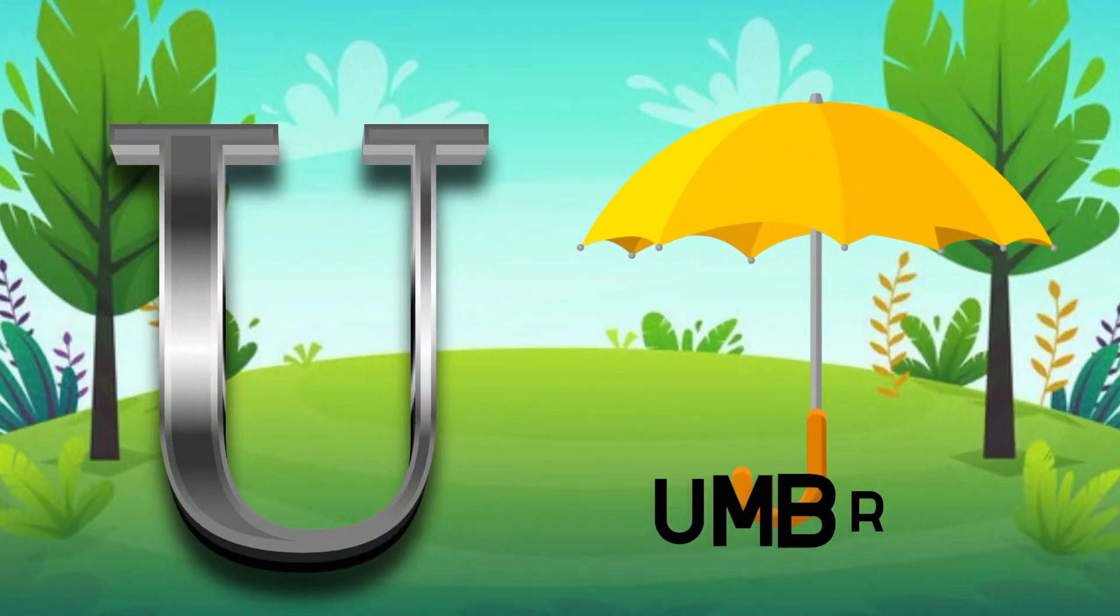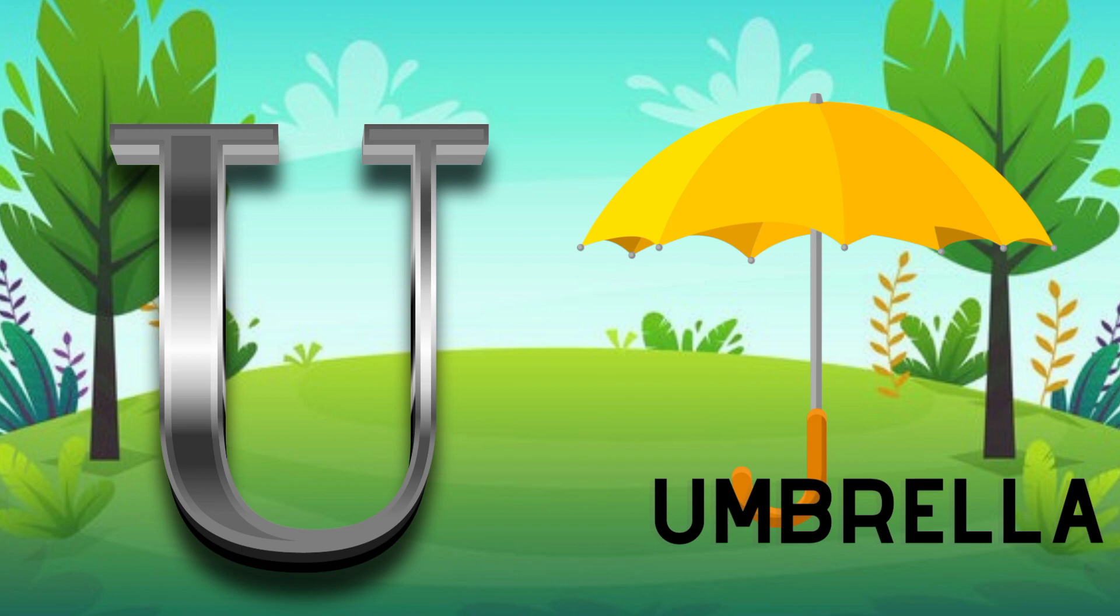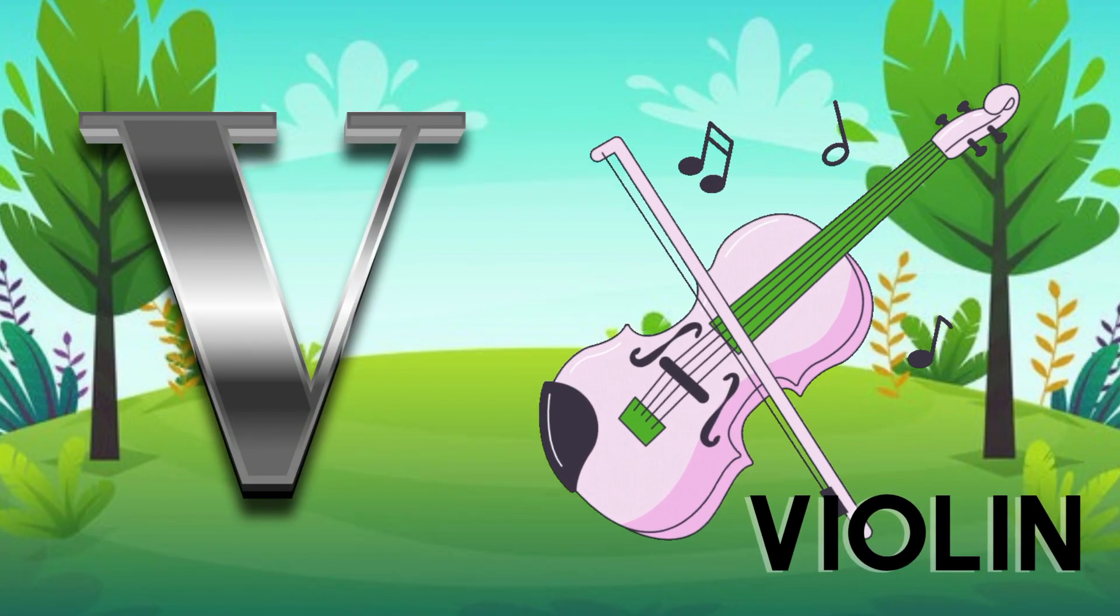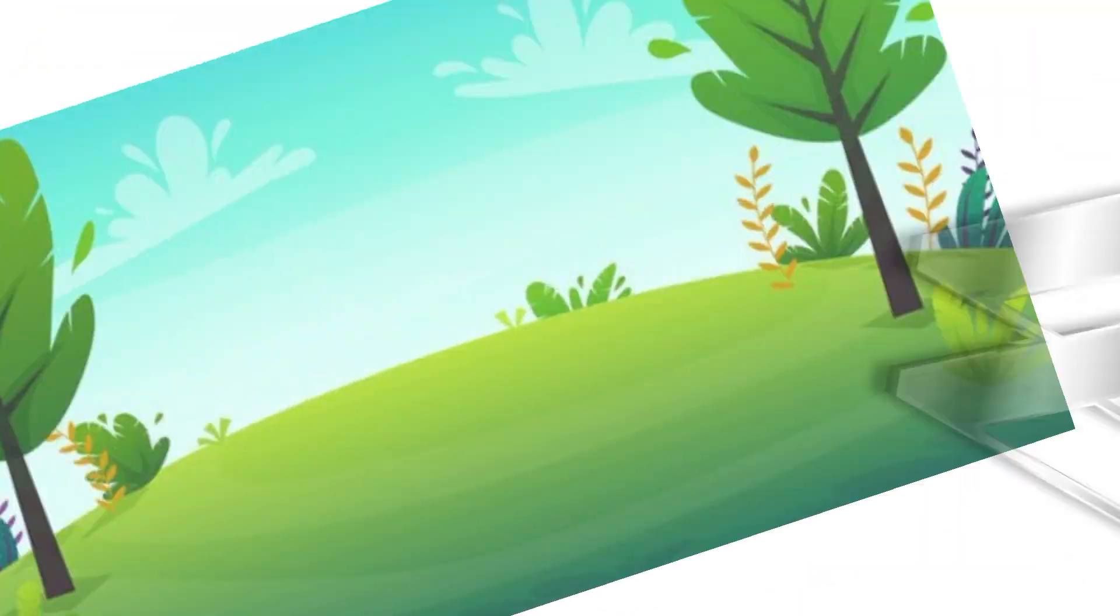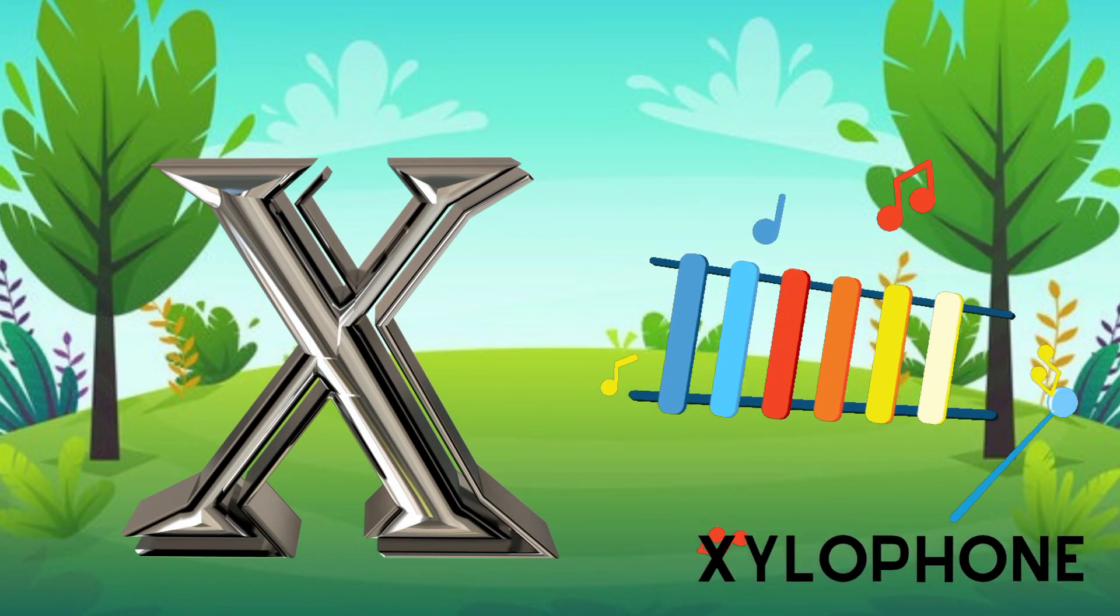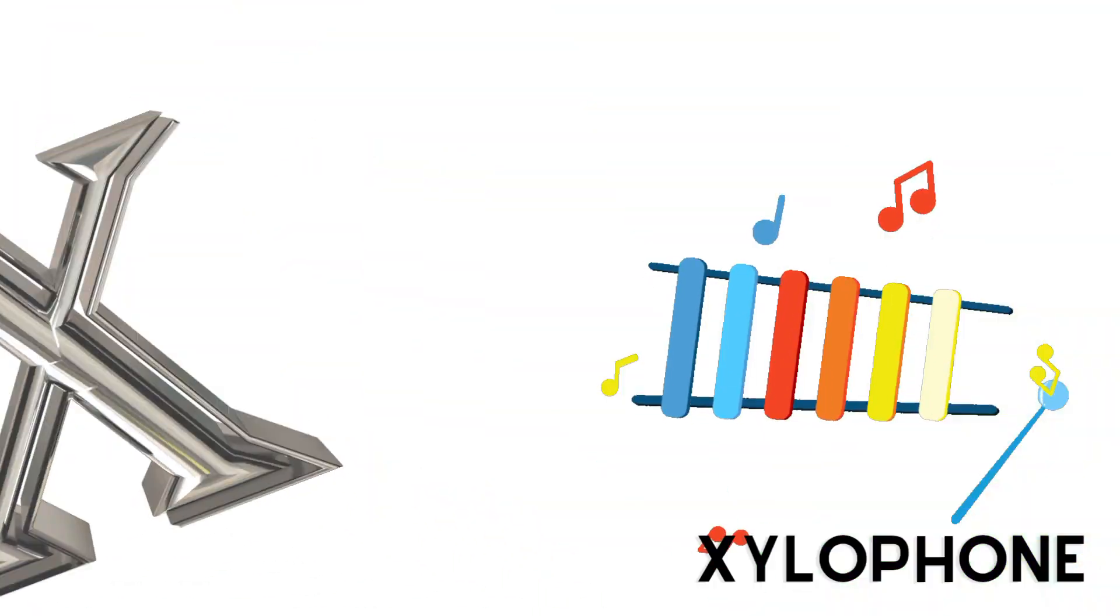U is for umbrella, u-u-umbrella. V is for violin, v-v-violin. W is for watch, w-w-watch. X is for xylophone, x-x-xylophone.